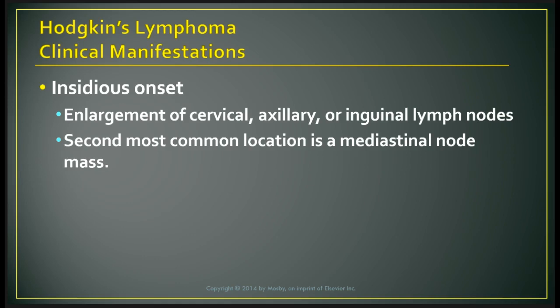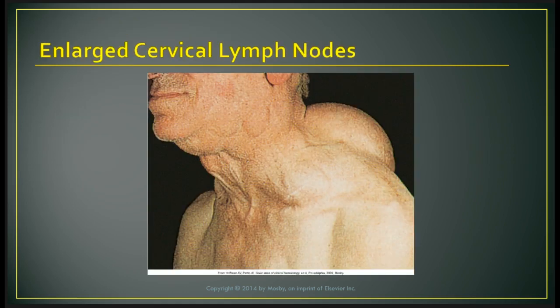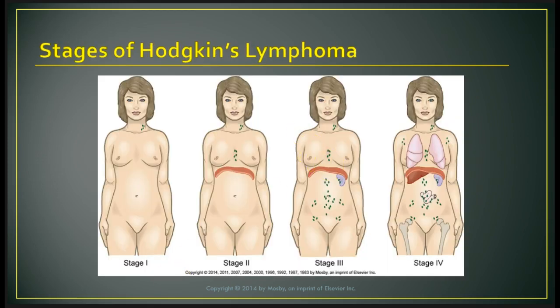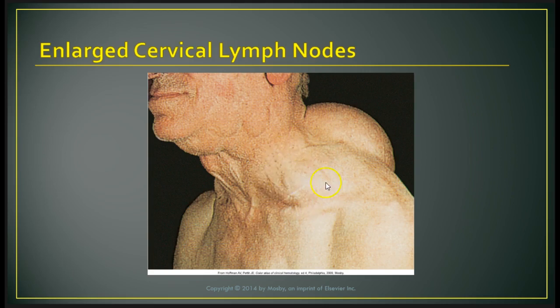Figure 30-13 shows an enlarged cervical lymph node in the neck of a patient — you can see the lymph nodes in the cervical area and along the back of the neck.